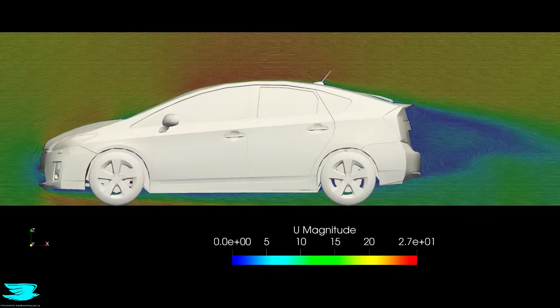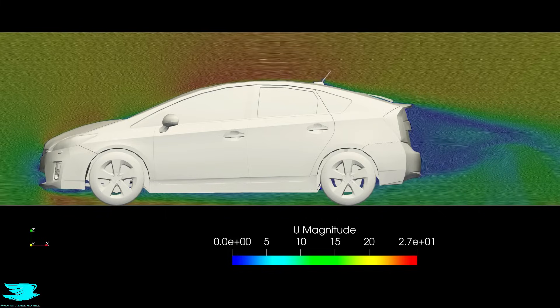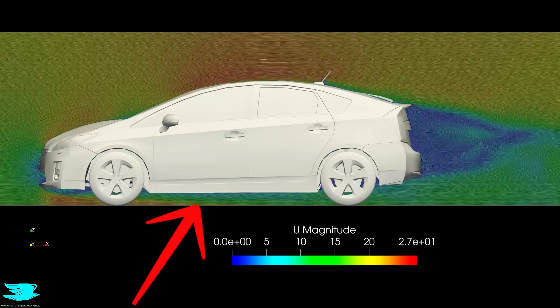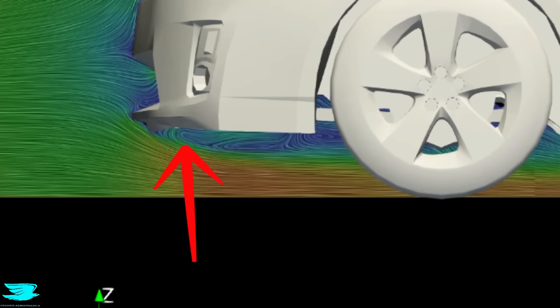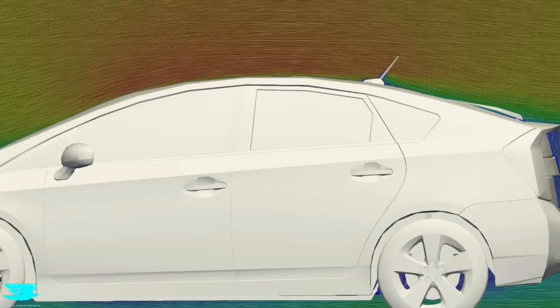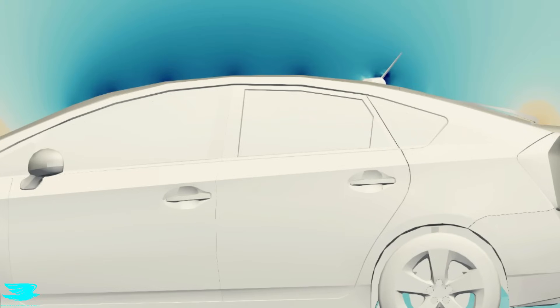For the original Prius, we get a pretty similar flow to the Tesla. The hood is pretty good, the underbody is okay. One disadvantage is that the lip at the front is sharp, and so some separation occurs. The Model Y fixed that problem. Now over the roof, the same problem occurs though. The flow accelerates, turns red, and the pressure drops.